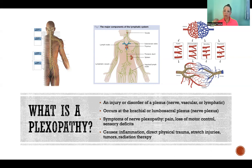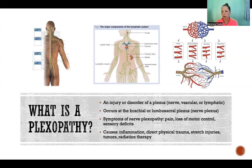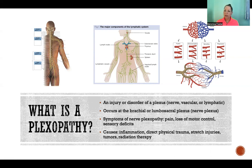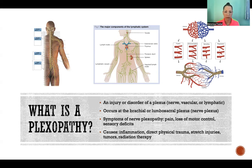For example, if there's a pressure that's pulling the shoulder down and at the same time a force that pushes the head in the opposite direction, that could cause a stretch injury of the brachial plexus up at the neck and shoulder. Also, things like tumors or radiation therapy can cause plexopathy — that's usually in reference to a lymphatic plexus. For instance, if there is a tumor that requires removal of lymph nodes or injury to a lymphatic plexus.